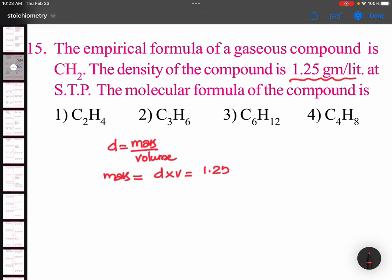Density is 1.25 grams per liter. Volume is 22.4 liters at STP. When you multiply these two, you will be getting 28 grams. So molar mass of the gaseous compound is 28.